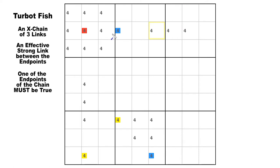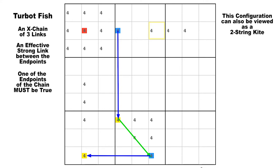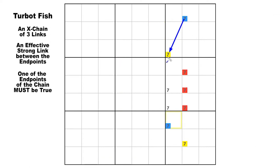In this next diagram, we again have strong, weak, strong. So you can eliminate the candidate four in row two, column two highlighted in red. When the middle link is diagonal as it is here, this configuration can also be perceived as a two-string kite. As I pointed out in video 14, it is possible to get up to three candidate eliminations with a turbo fish if you have a diagonal link on both ends of the chain and the endpoints lie in the same house. We have strong, weak, strong — so those three sevens colored red in block six can all be eliminated in this very rare case.